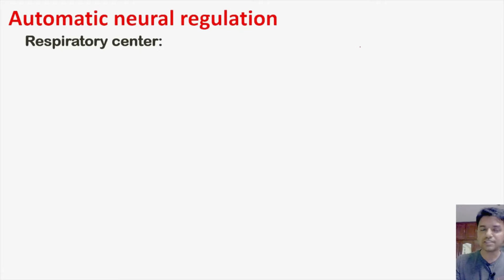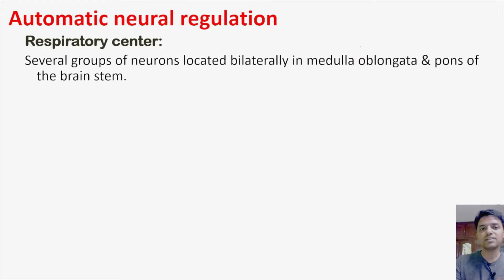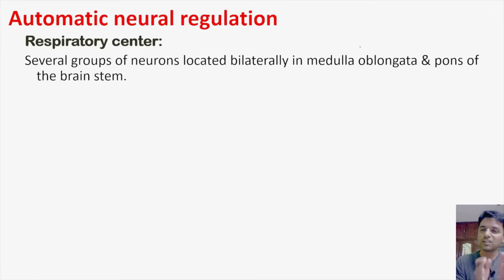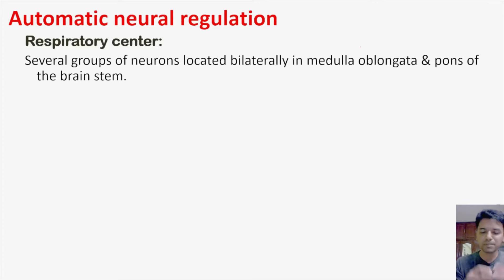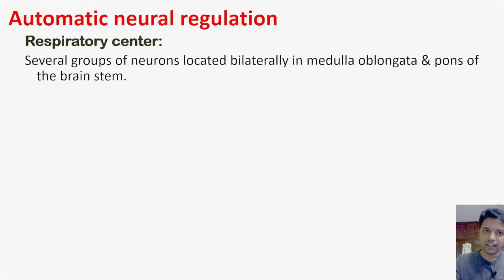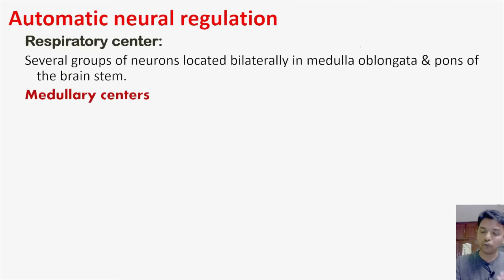Automatic neural regulation is done by a center called the respiratory center. The respiratory center is a group of neurons located bilaterally on both sides, in the medulla oblongata as well as in the pons. These groups of neurons are subdivided into four groups: two groups are present in the medulla and two groups are present in the pons.